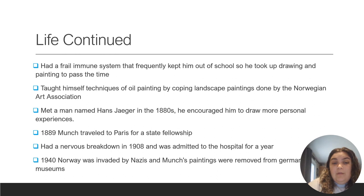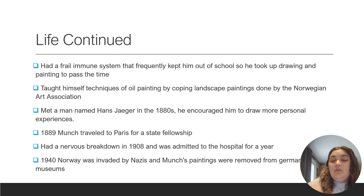You may be wondering where Edvard learned to paint — did he just figure it out? He actually taught himself how to oil paint by looking at the Norwegian Art Association landscape paintings. He would copy those paintings and teach himself how to do it.